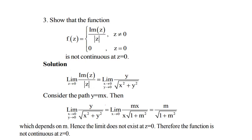Now we discuss some problems. Show that the function f(z) = Im(z) / |z| for z ≠ 0, and f(0) = 0 for z = 0, is not continuous at z = 0. We take the limit as z tends to 0 of Im(z)/|z|. Since z = x + iy, Im(z) = y and |z| = √(x² + y²).